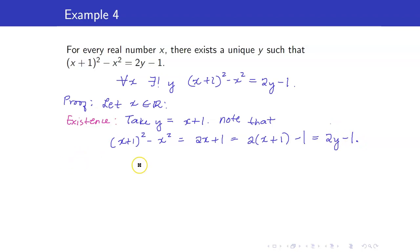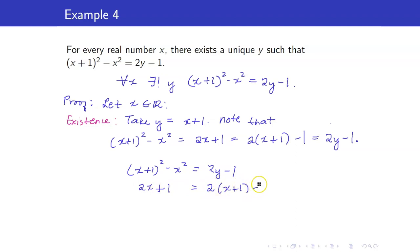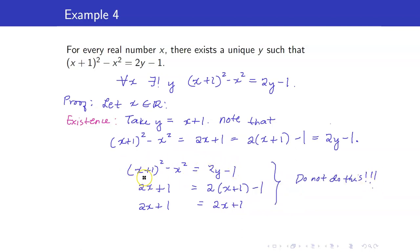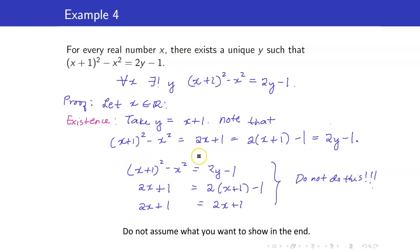Please don't write the proof by starting with (x+1)² − x² = 2y − 1 and manipulating to 2x + 1 = 2(x+1) − 1, then 2x + 1 = 2x + 1. You do not write your proof that way, because you already assumed these two expressions are equal — but that is exactly what you want to show.